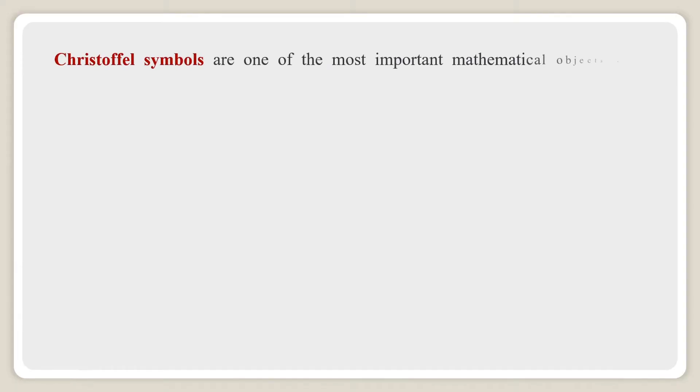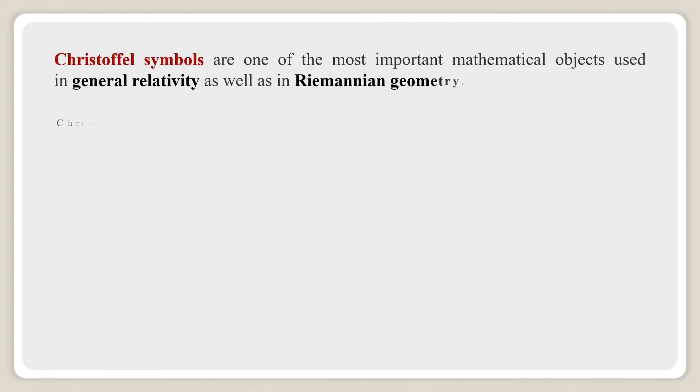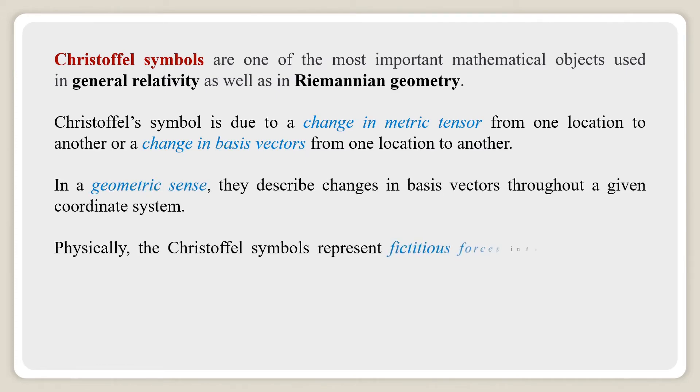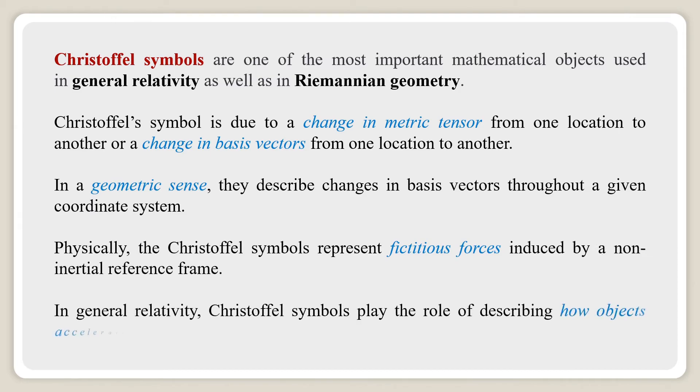Christoffel symbols are one of the most important mathematical objects used in general relativity as well as in Riemannian geometry. Christoffel symbol is due to a change in metric tensor from one location to another, or a change in basis vectors from one location to another.